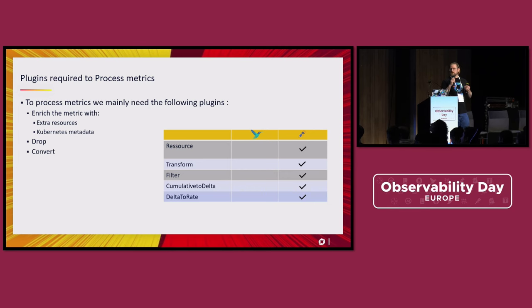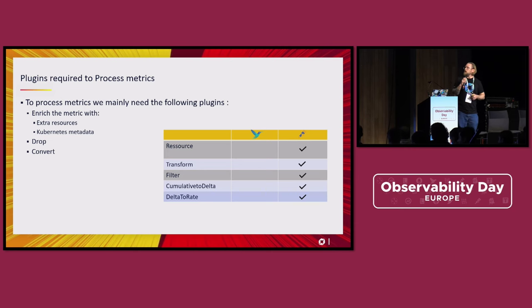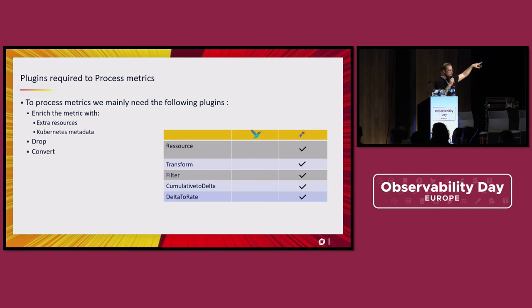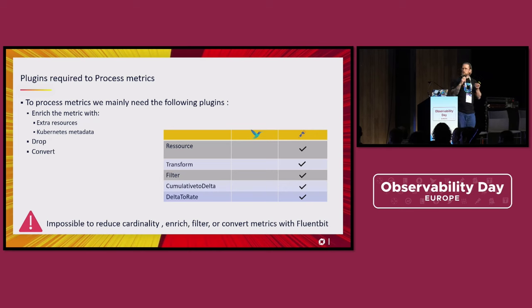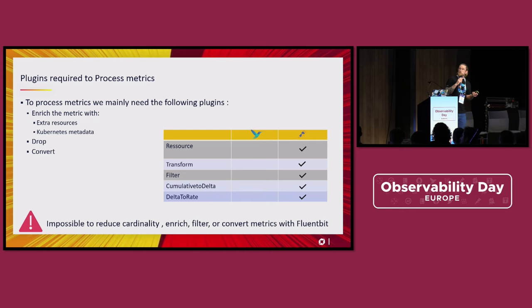In terms of metric processing, you want to enrich metrics, drop metrics, add metadata. On the Collector, you have plenty of options: reduce cardinality, rename, transform. But in FluentBit 2.x there's no way of modifying metrics data. This morning it was announced that with version 3 you should be able to do that, which is fantastic. Another big disadvantage of FluentBit 2.x is no way of reducing cardinality — that's going to be quite painful if you want to reduce the cost of your metrics. Also, if you're collecting Prometheus and want to convert to Delta depending on the storage, there's no way to do that conversion in FluentBit as of now.